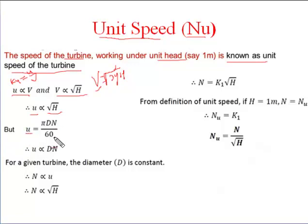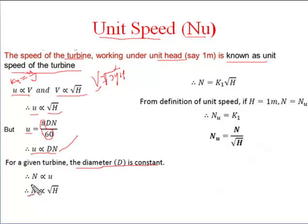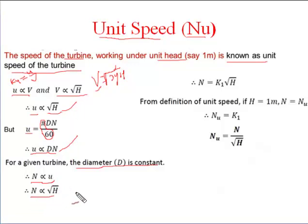We also know that u is equal to πDN divided by 60. By eliminating the constant π/60, we get u is directly proportional to D·N. For a given turbine the diameter is constant, so N is directly proportional to u. Since u is directly proportional to √H, we get N is directly proportional to √H.